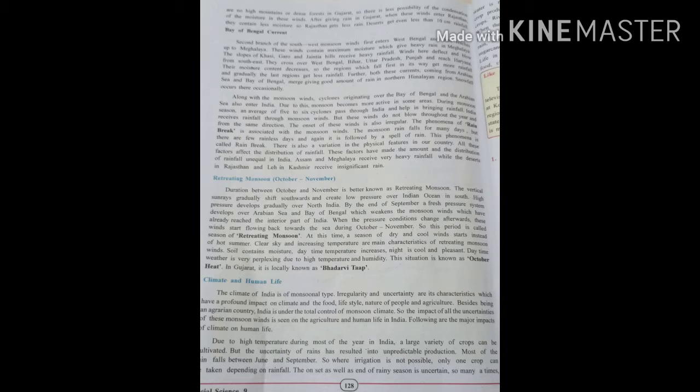Retreating monsoon, students. October to November. The duration between October and November is better known as the retreating monsoon. It is the period after the monsoon. The vertical sun rays gradually shift southwards, creating low pressure over Indian Ocean in the south. High pressure develops gradually over north India by the end of September. Fresh pressure systems develop over the Arabian Sea and Bay of Bengal, which weakens the monsoon winds. When the pressure conditions change, these winds start flowing back toward the sea.